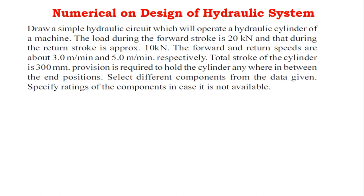Draw a simple hydraulic circuit which will operate a hydraulic cylinder of a machine. The load during the forward stroke is 20 kN and during the return stroke is approximately 10 kN. The forward and return speeds are about 3 m per minute and 5 m per minute respectively. The stroke of the cylinder is 300 mm.